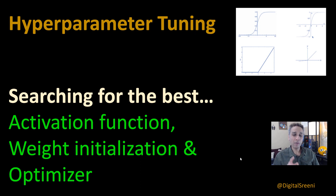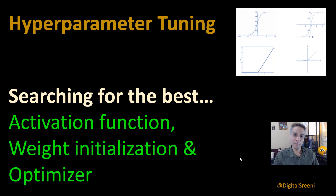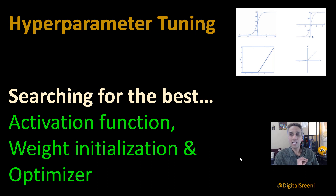I really urge you to watch the last two or three videos on this topic so you have some context about what we are talking about here. We're going to use exactly the same example of MNIST classification and quickly tweak the hyperparameter space of activation, weight initialization, and optimizer to find the best one. Let's jump into the code.